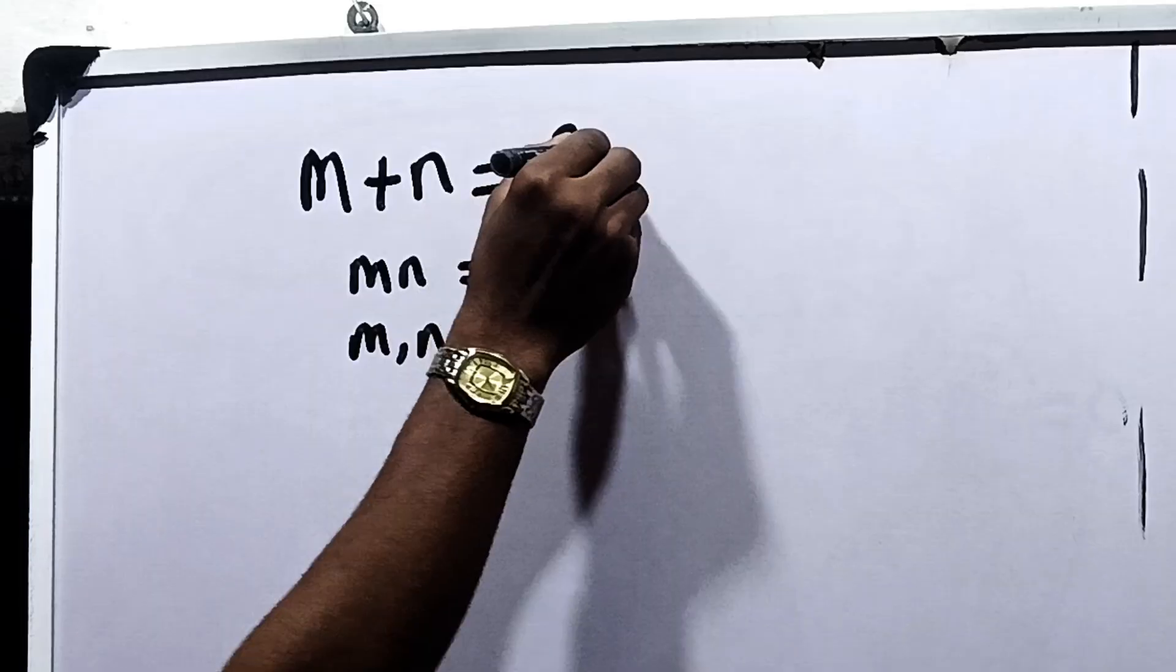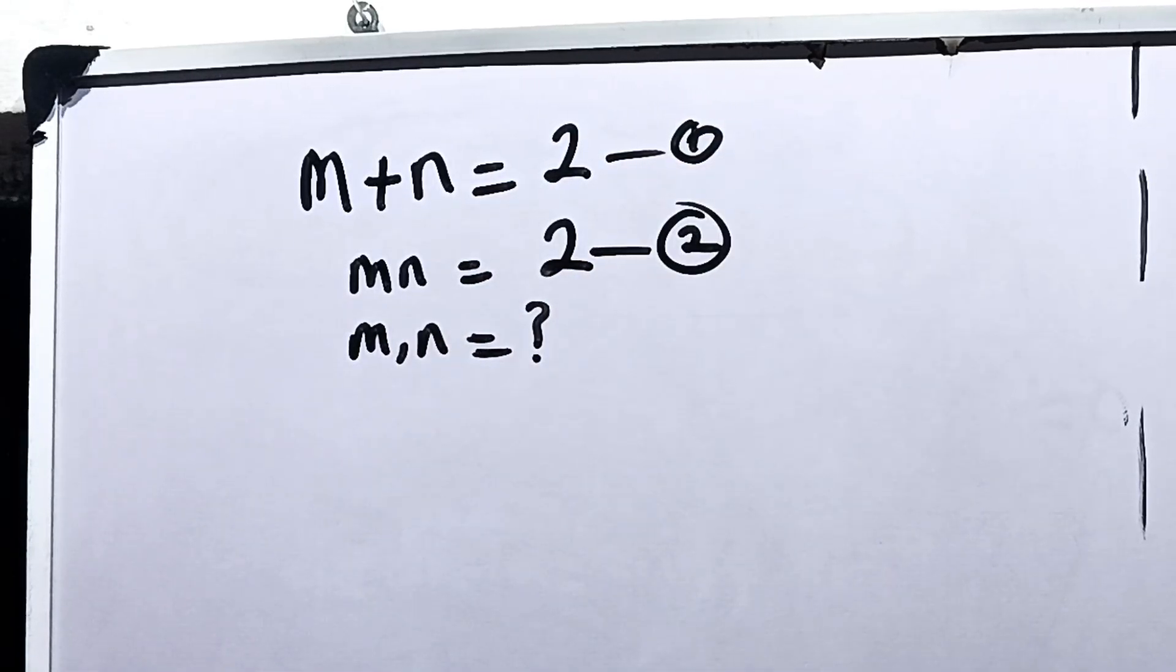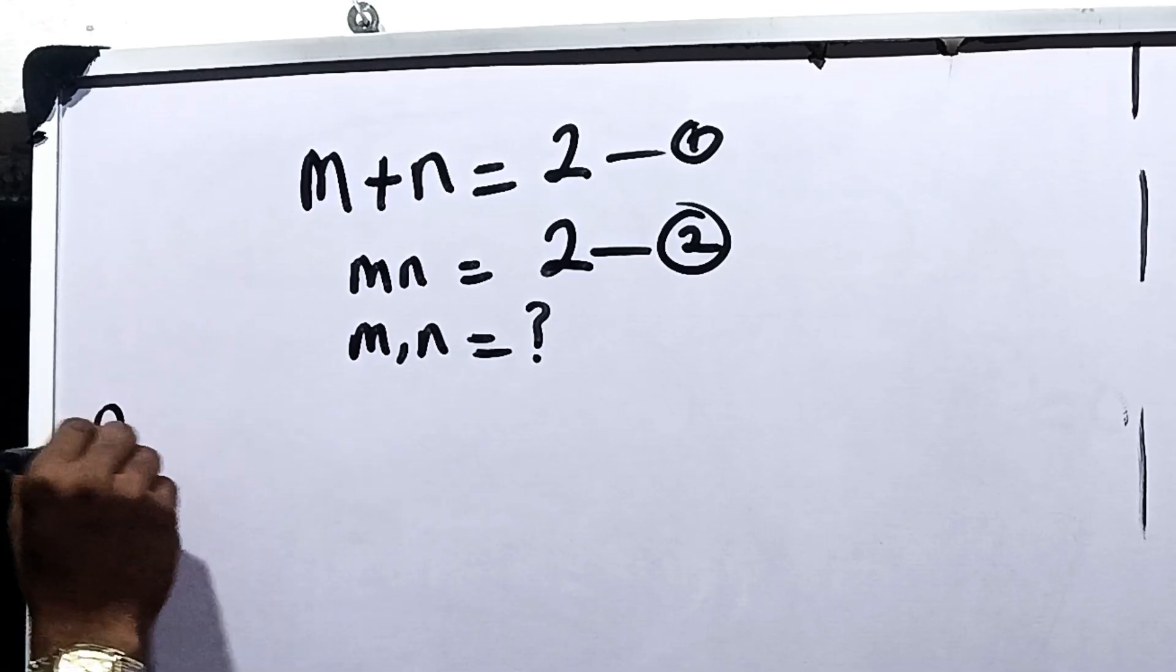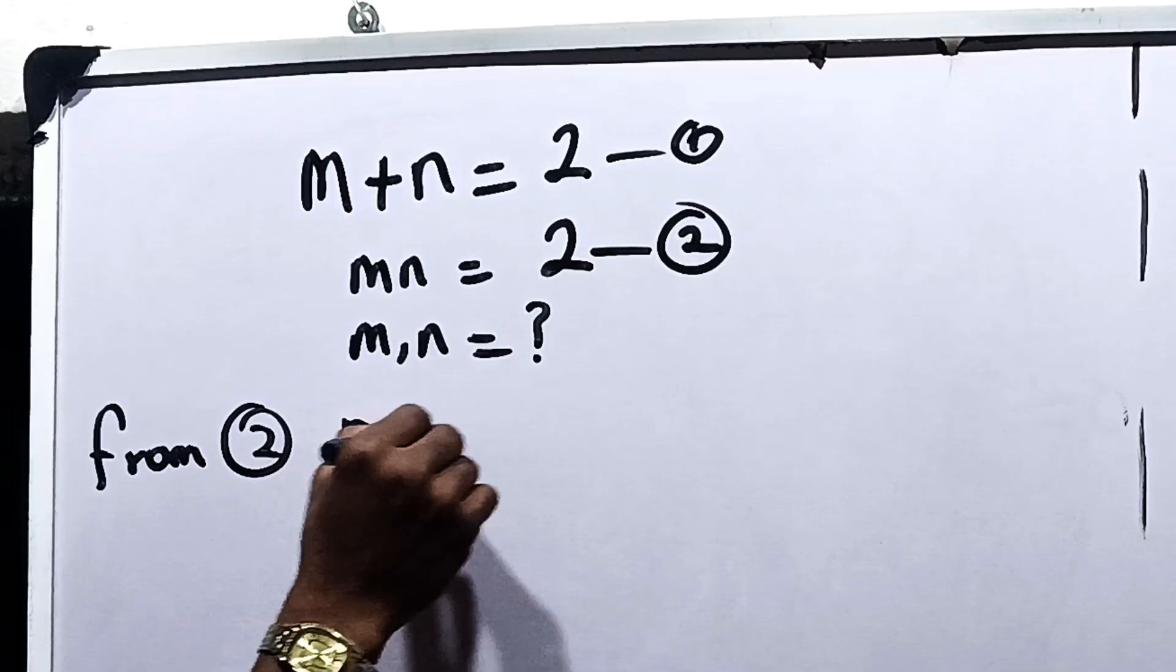First, let's call this equation 1 and call this equation 2. Now, from equation 2, we say that n is equal to 2 over m.